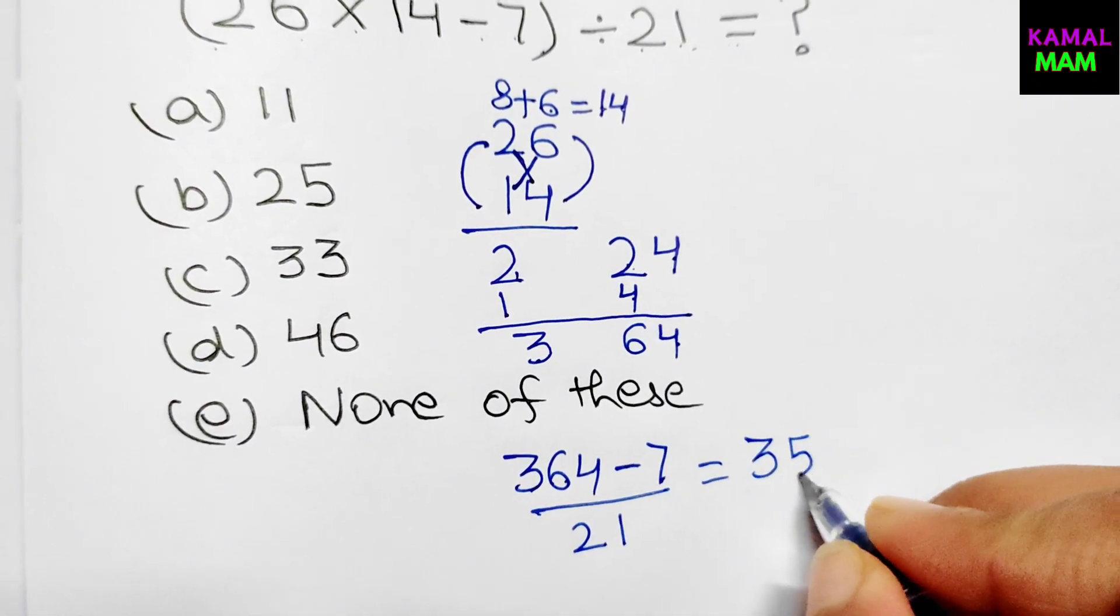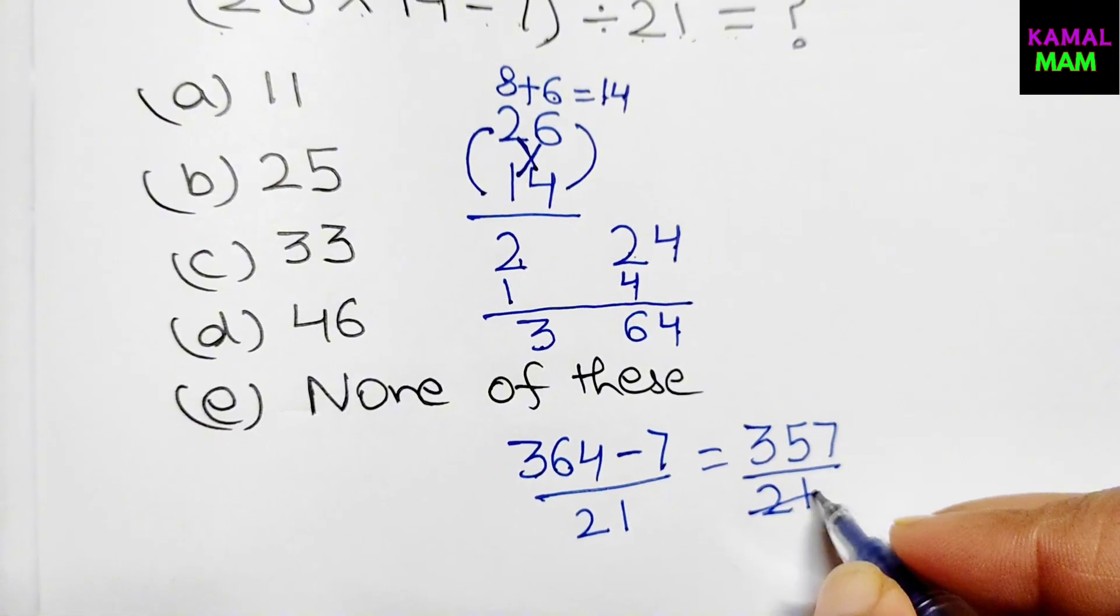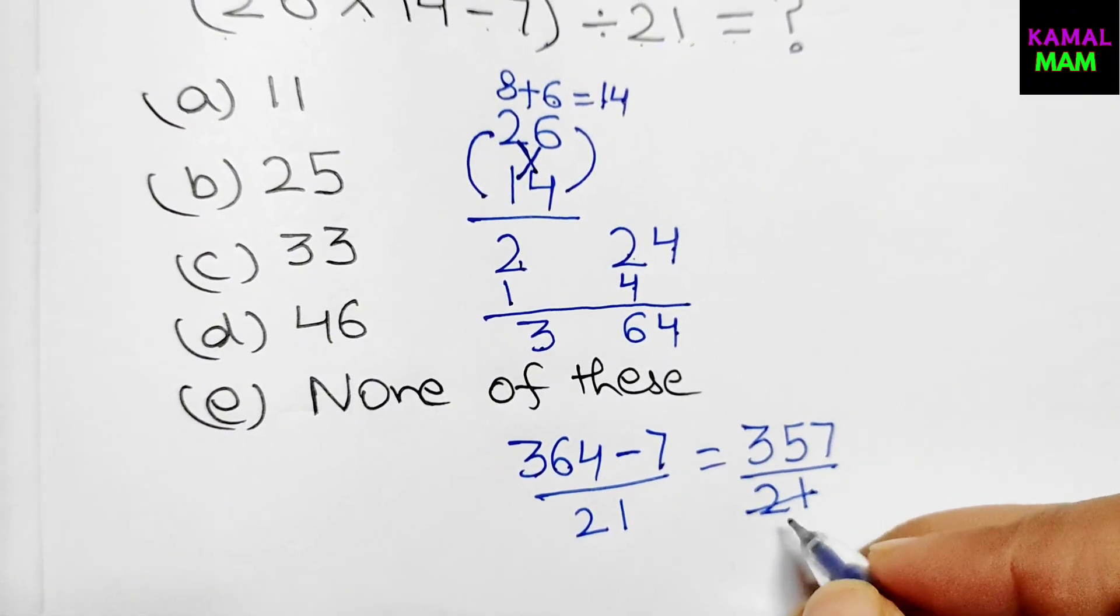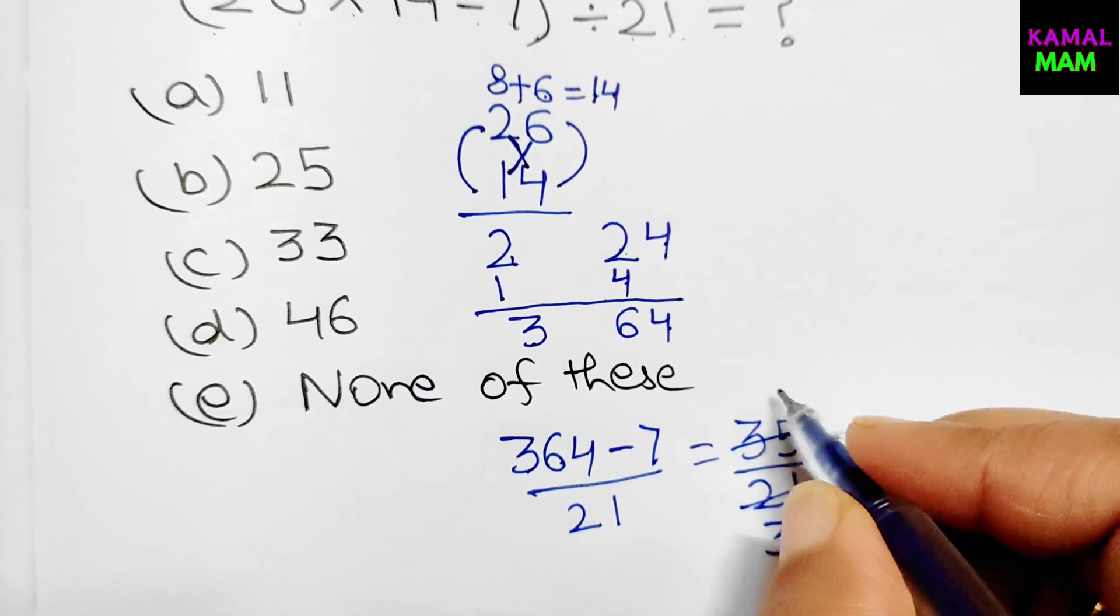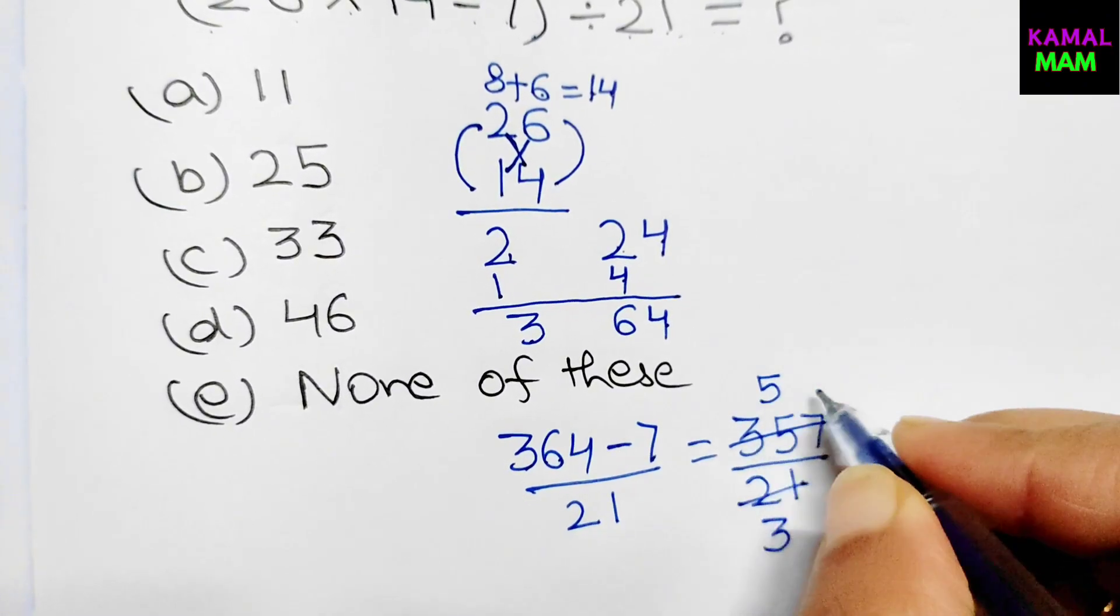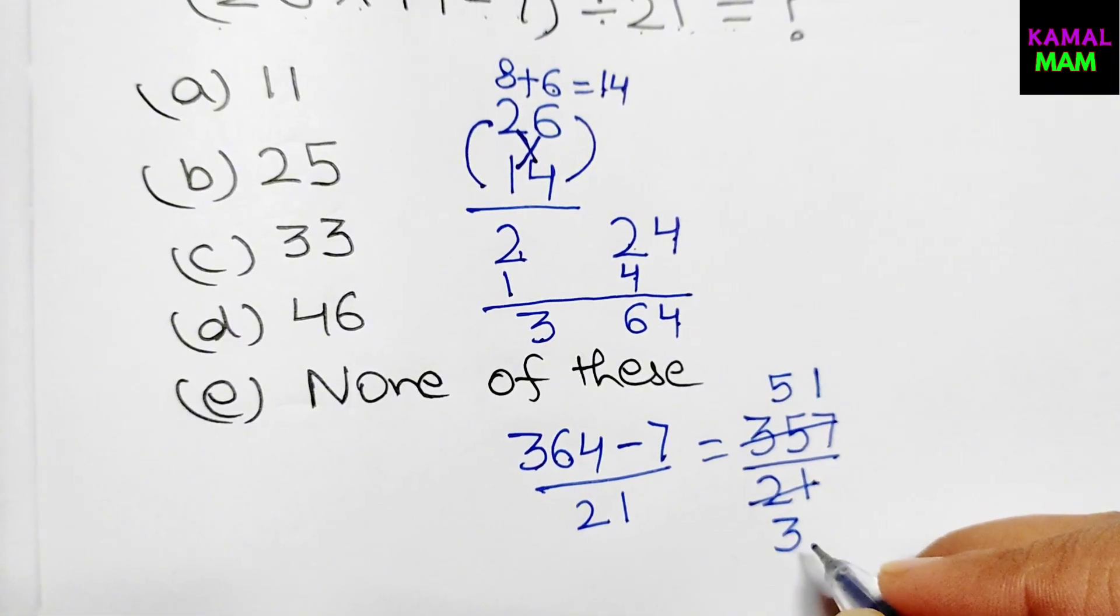Now it goes on the table of 7. Here 7 times 3 is 21, and here 7 times 5 is 35, and here 7 times 1 is 7. Now it goes on the table of 3. Here 3 times 1 is 3, 3 times 7 is 21.